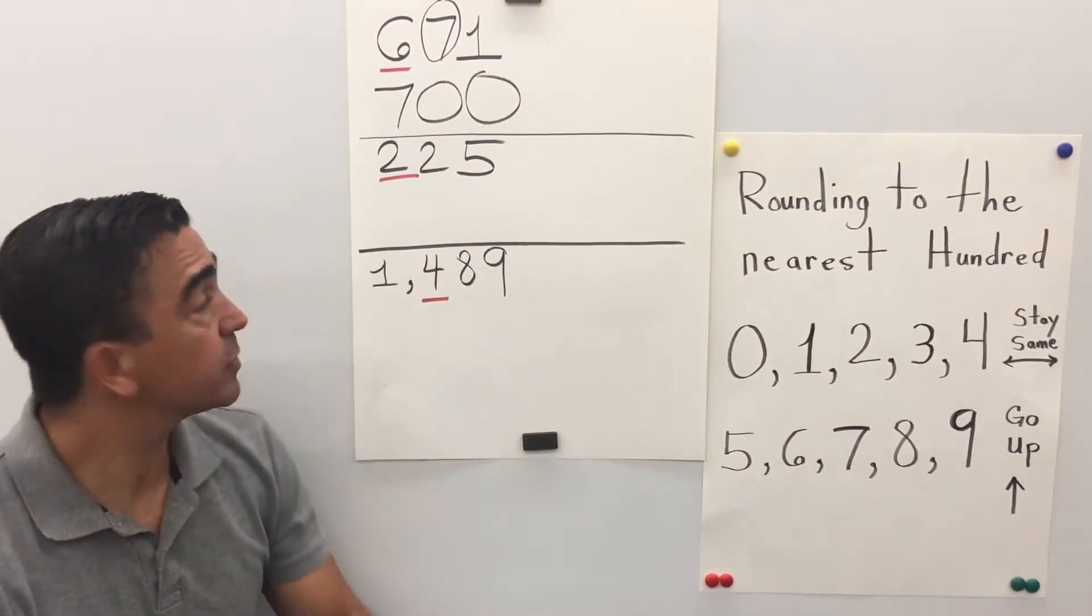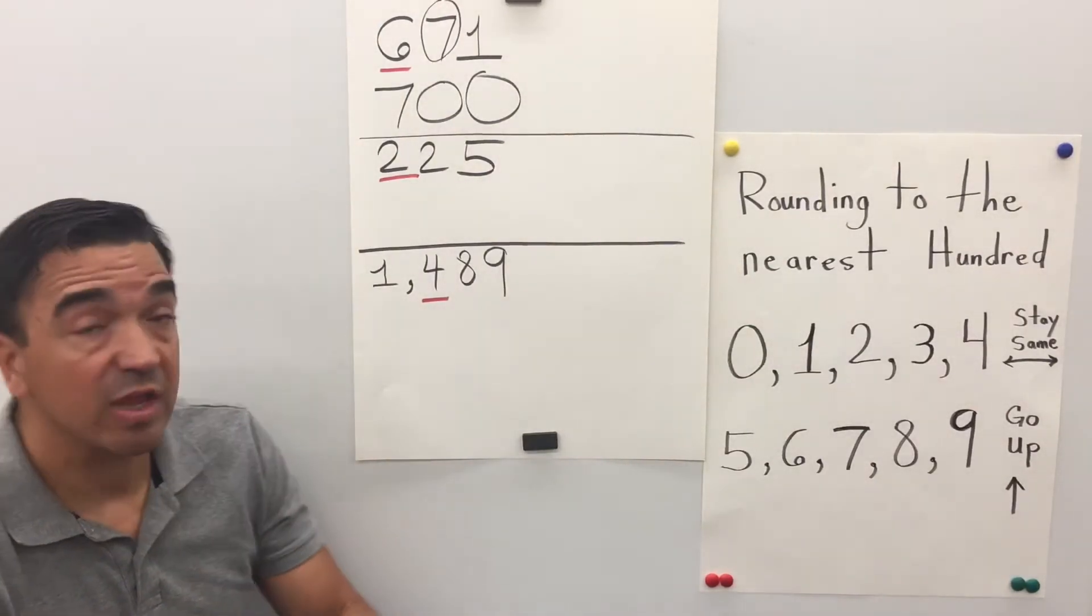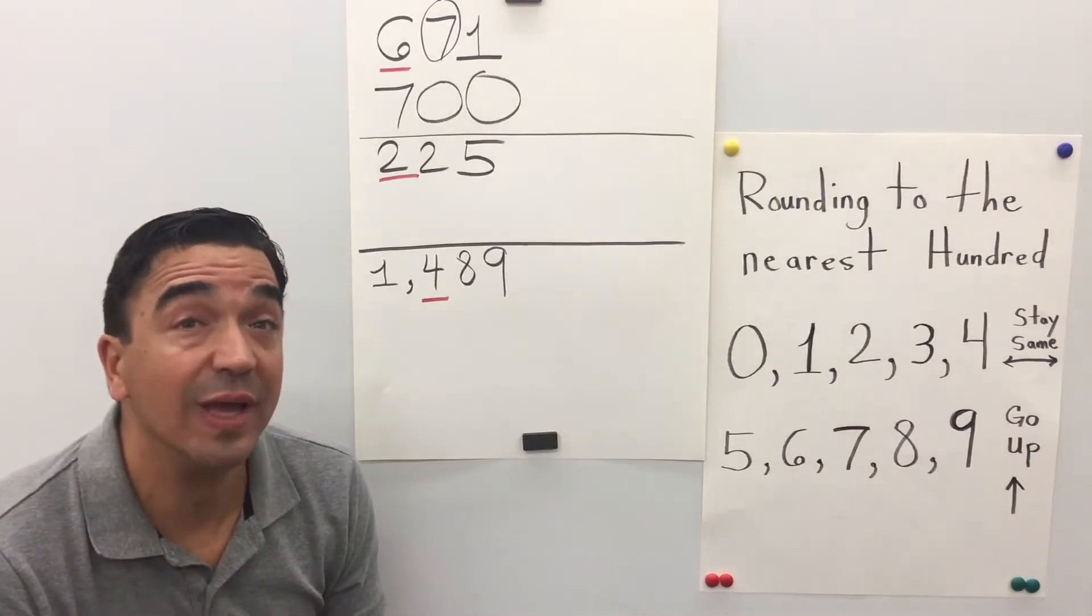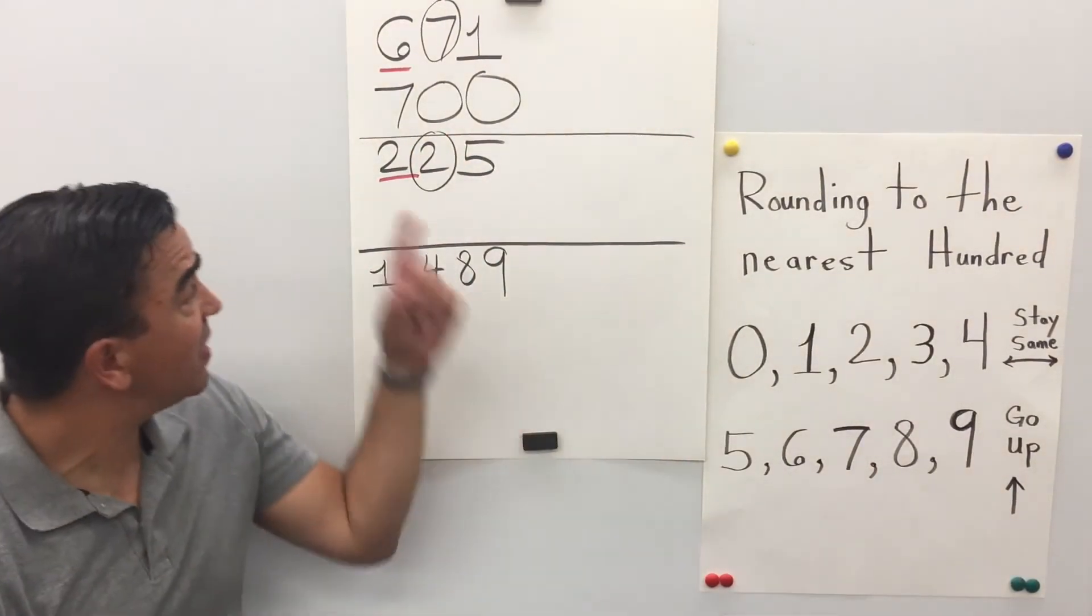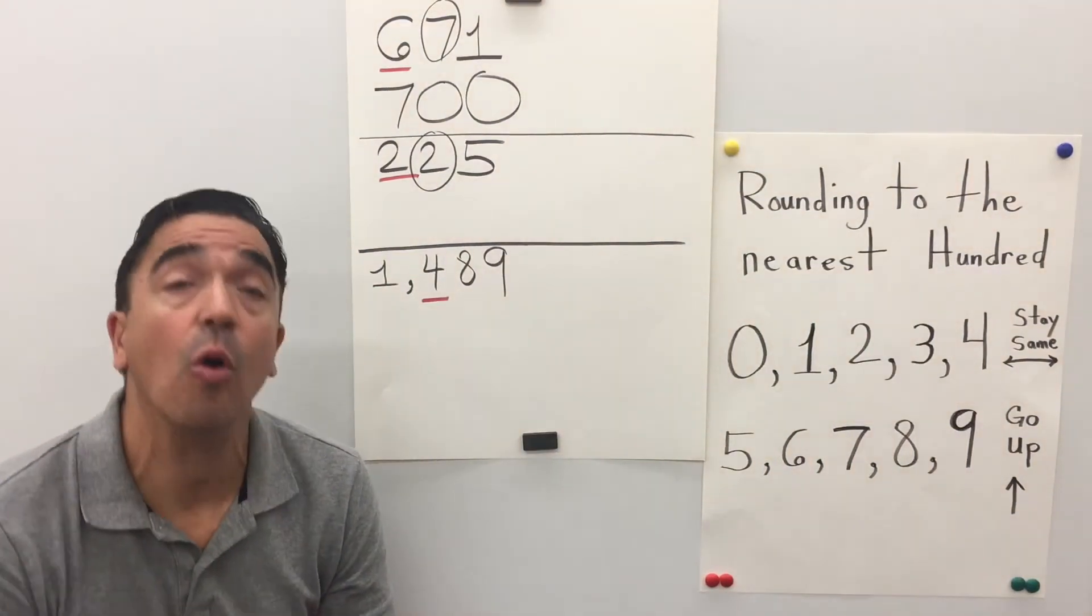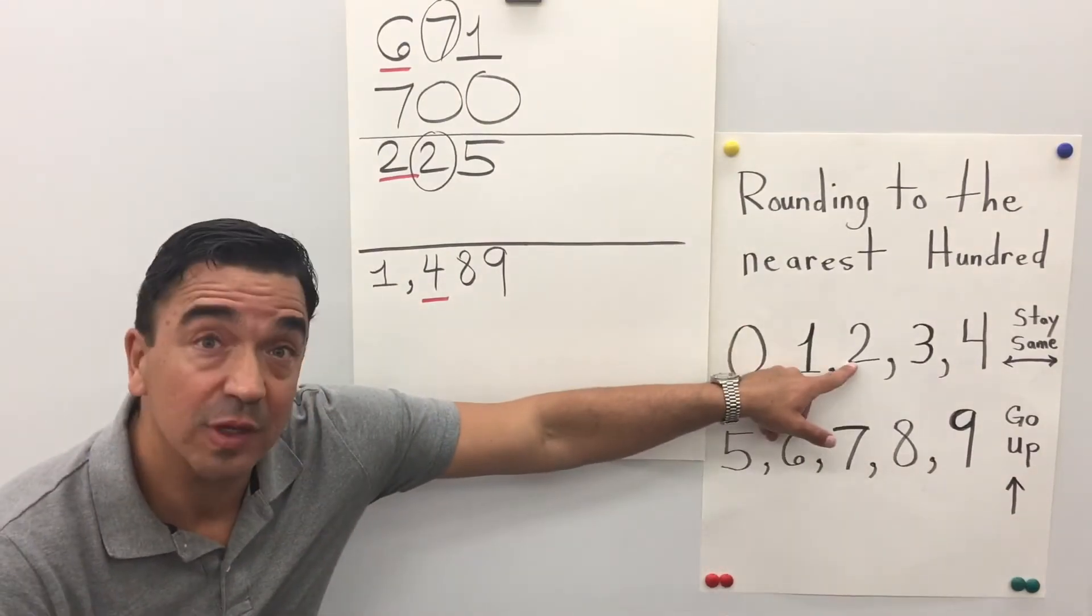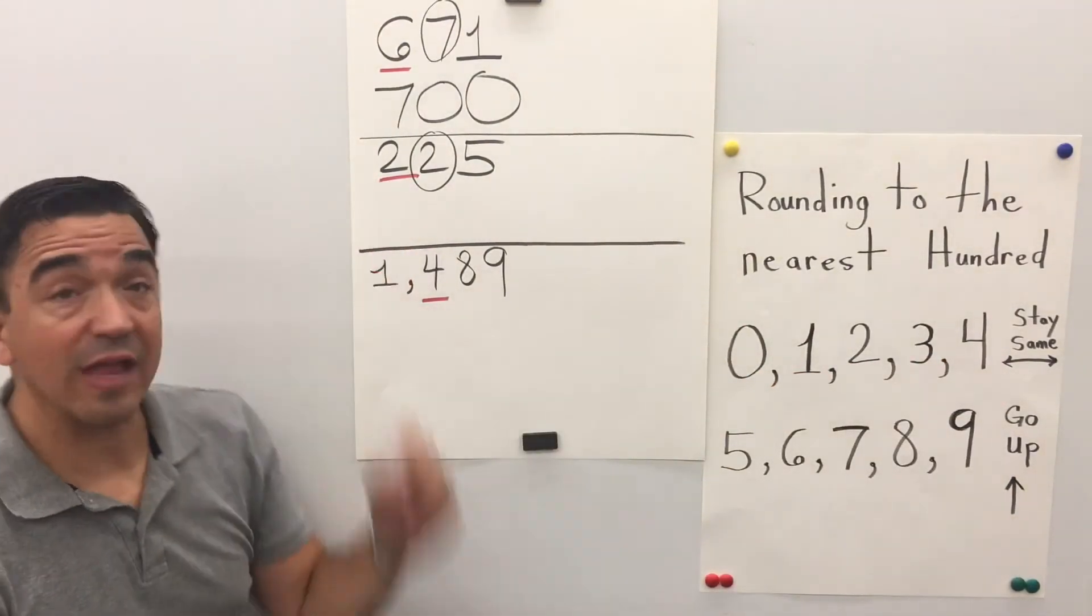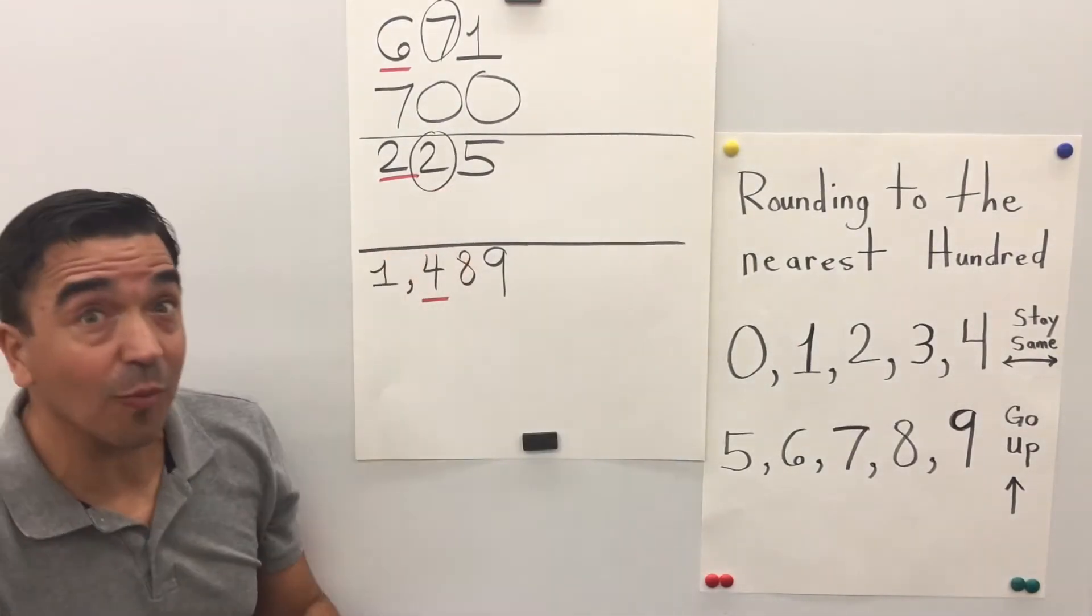Let's look at number 2: 225. The 2 is in the hundreds place. There's also a 2 in the tens place, and that 2 in the tens place is going to tell the 2 in the hundreds place what to do. So remember that trick? The 2 is going to stay the same because this 2 tells it what to do.